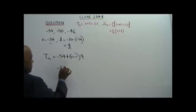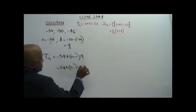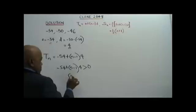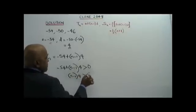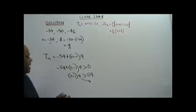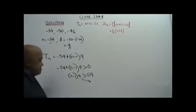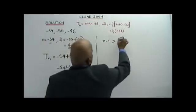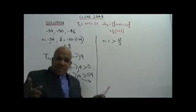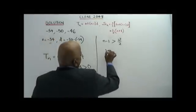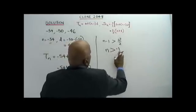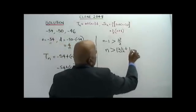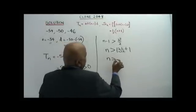So: negative 54 plus N minus 1 times 4 is more than 0. Bringing negative 54 to the other side gives N minus 1 times 4 more than 54. Dividing by 4: N minus 1 is more than 54 over 4, which is 27 over 2, that is 13 and a half. So N is more than 13 and a half plus 1, giving N more than 14 and a half.